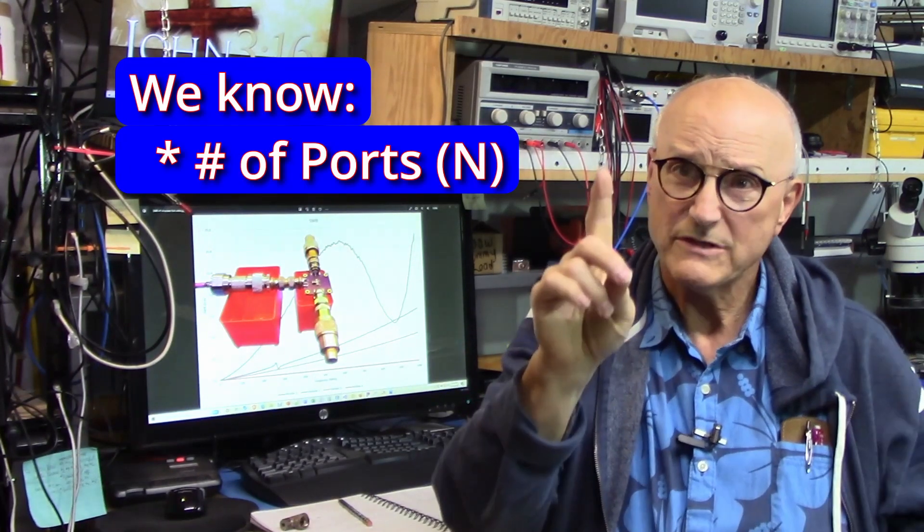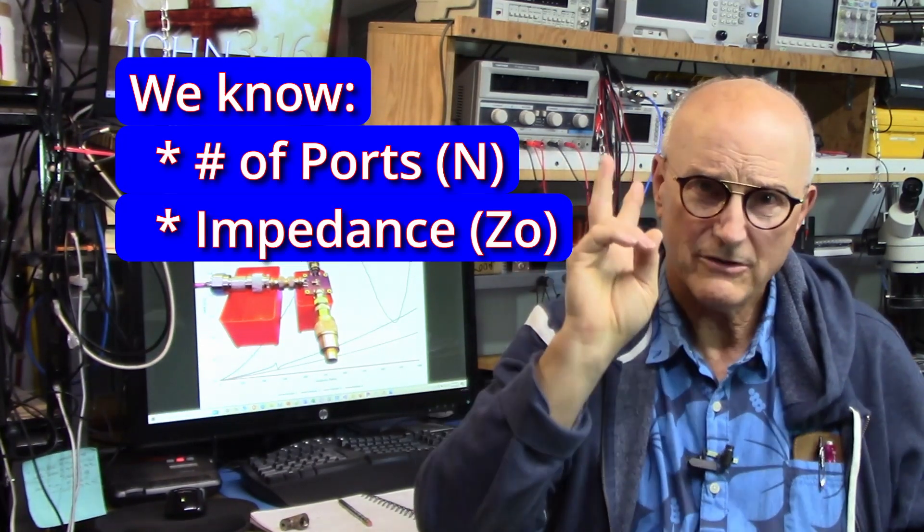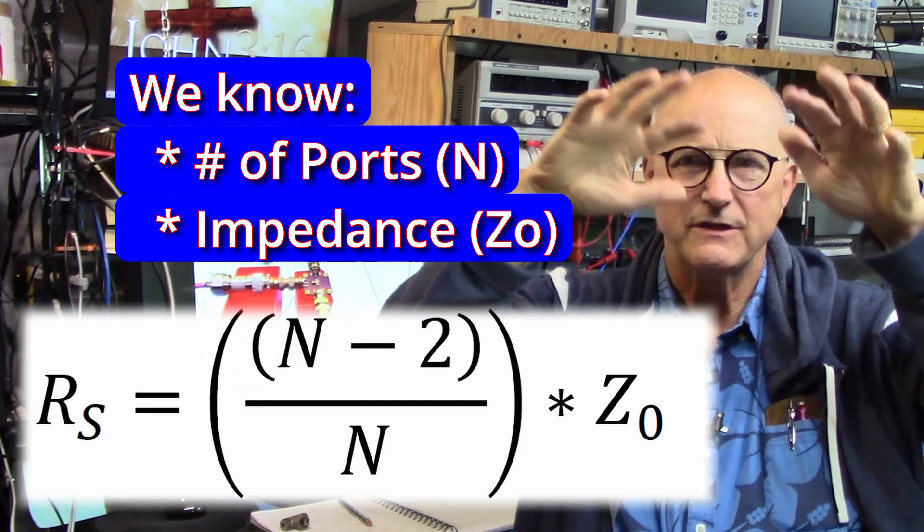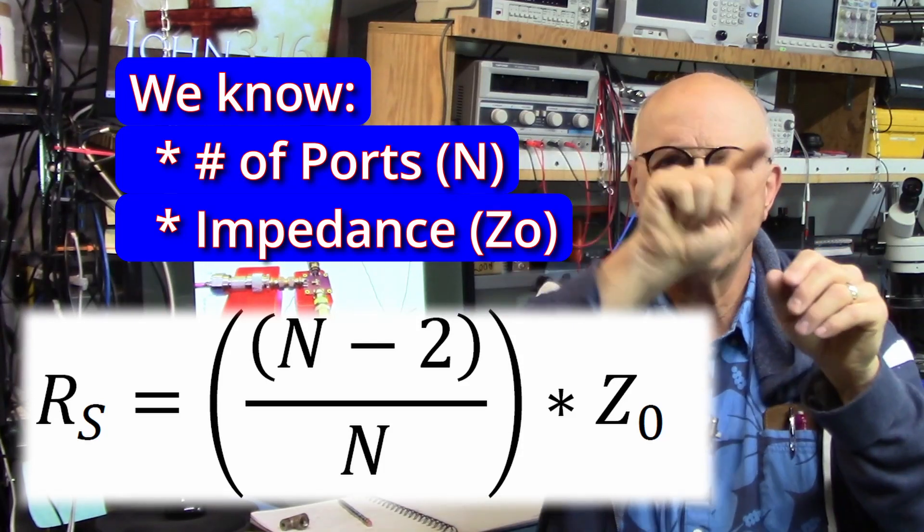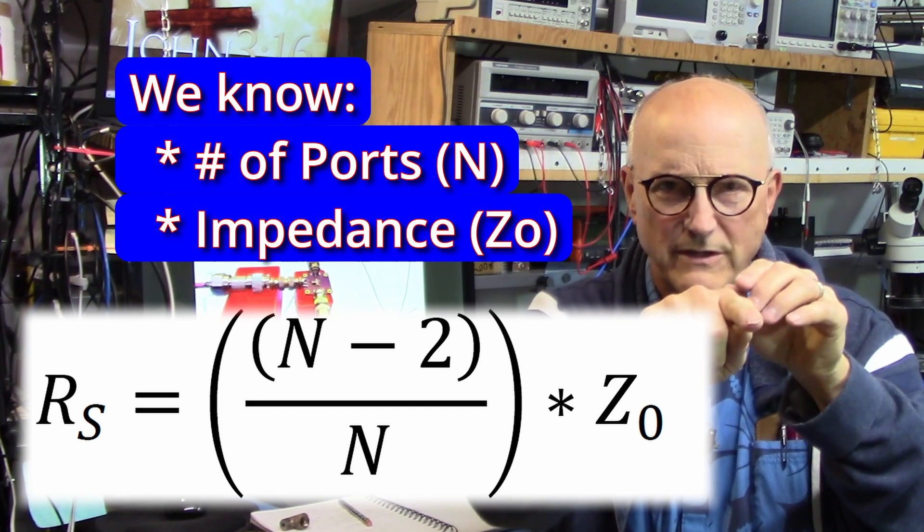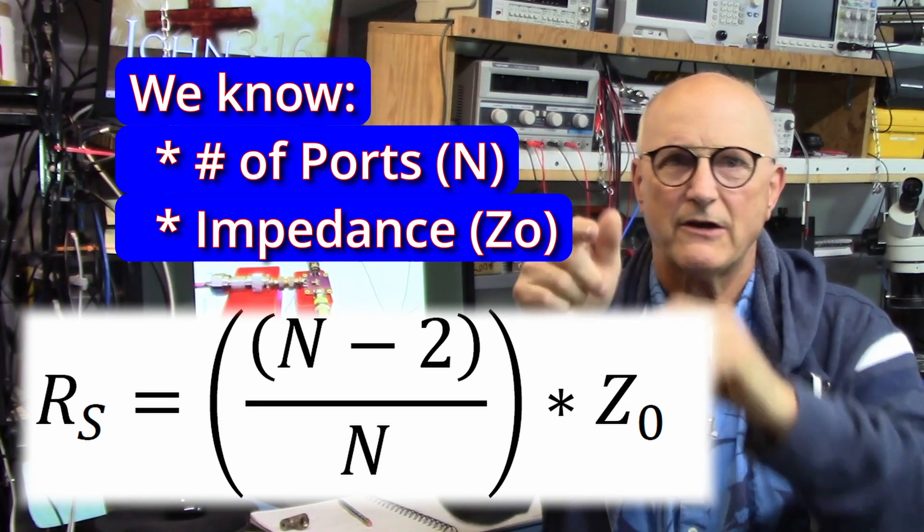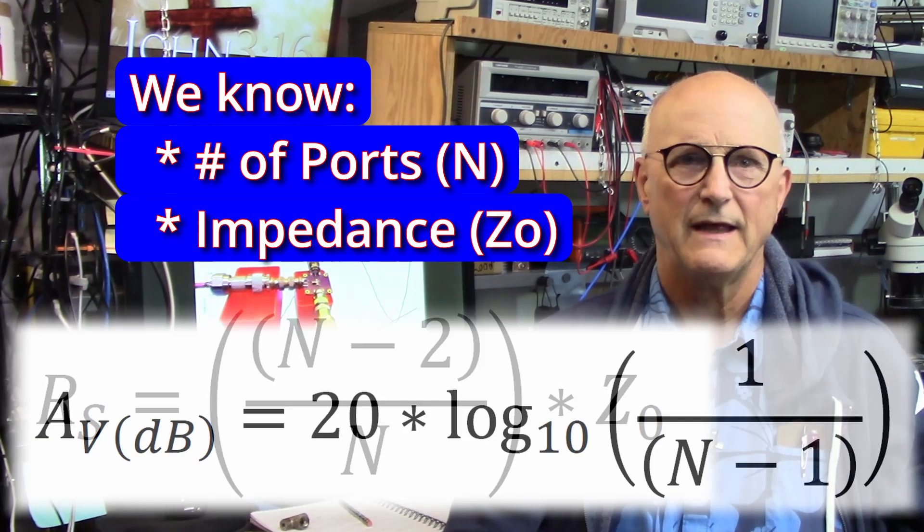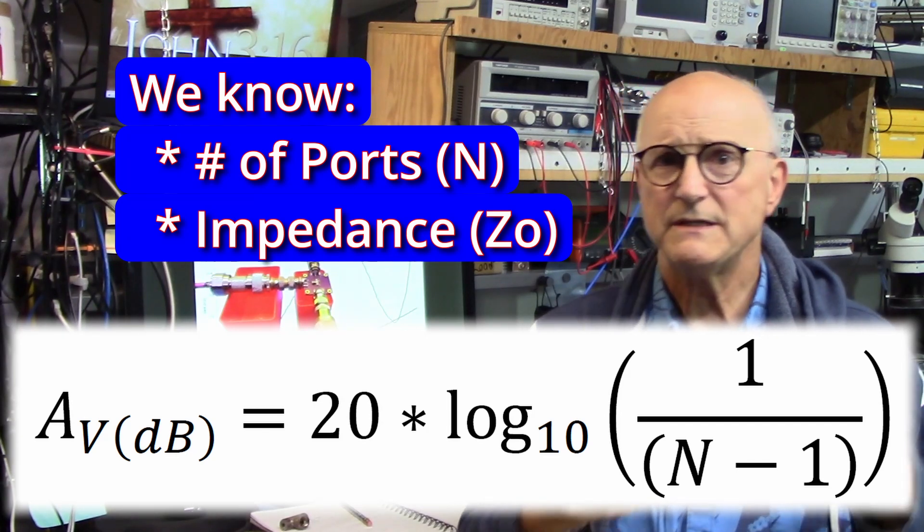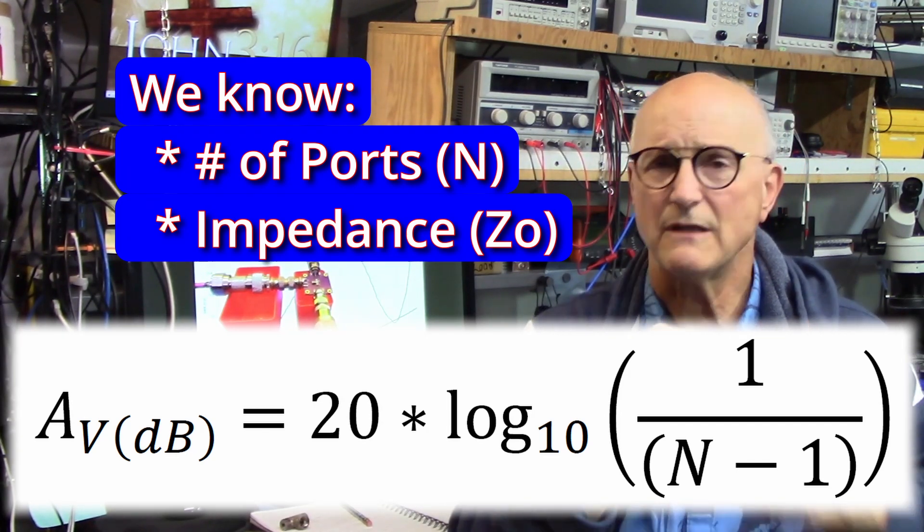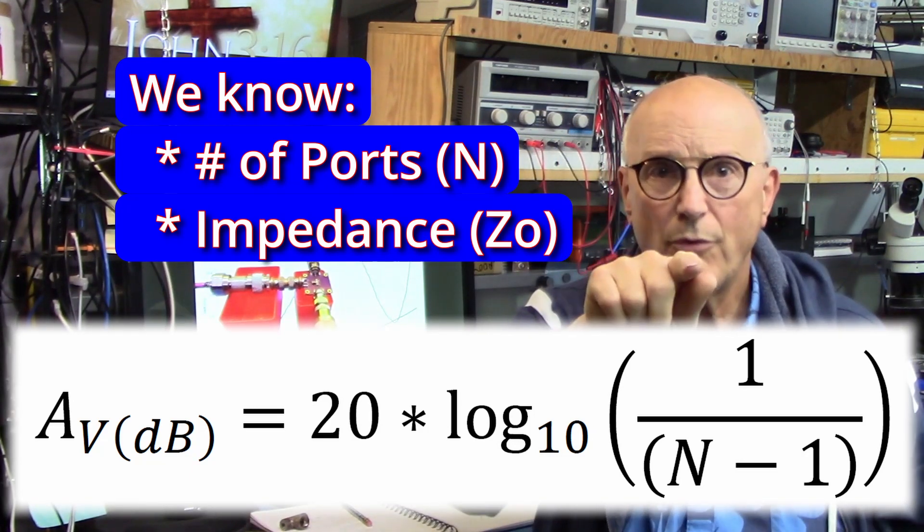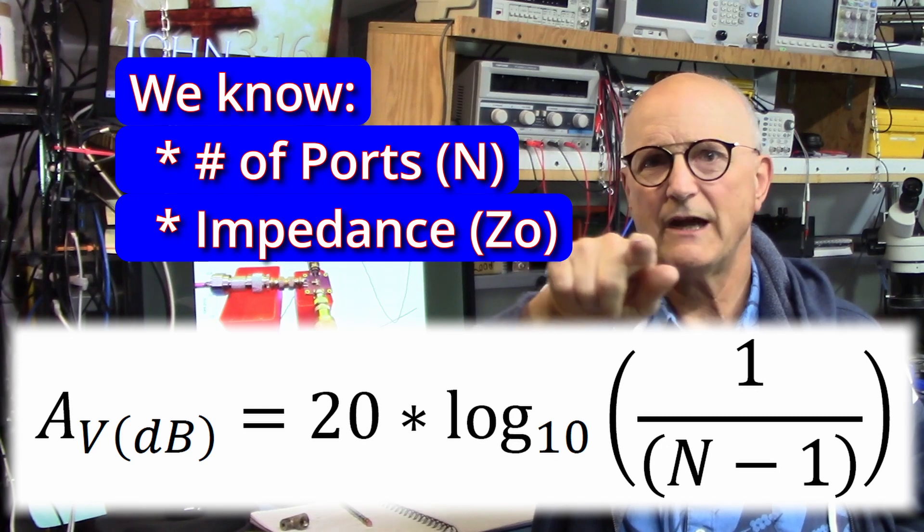Now, I put a link down in the description to a PDF which has all of these equations and definitions defined for you. If we know the number of ports we want and the characteristic impedance we're shooting for, then the required series resistor is equal to this big quantity: the number of ports we want minus 2 on the top divided by the number of ports we want, all times the characteristic impedance that we're shooting for. The power loss from the input port to the output port in dB is equal to 20 times the log to the base 10 of 1 divided by the number of ports that we're looking to design minus 1.